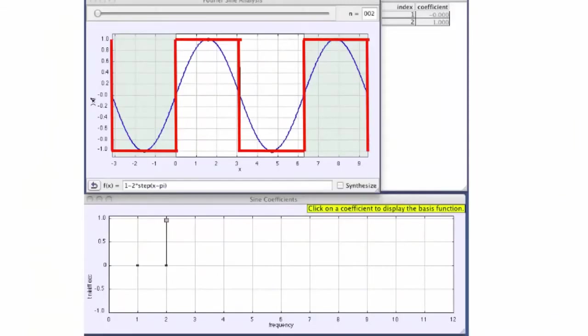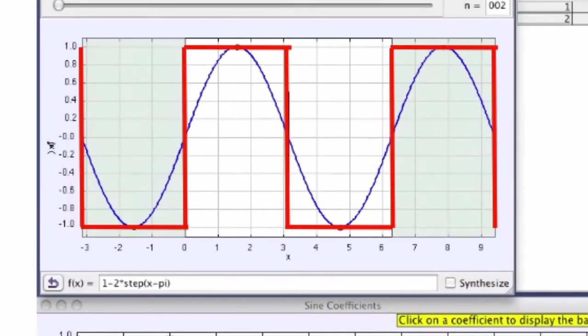To really drive Fourier series and Fourier coefficients home, let's take a quick look at this applet. So I can construct an arbitrary periodic function, say a square wave. And then we can see how many terms we want to approximate this function with. Let's start with just two terms. Well that's not a good fit.